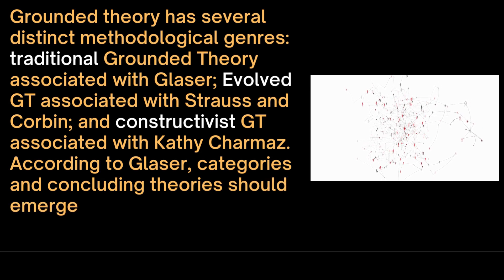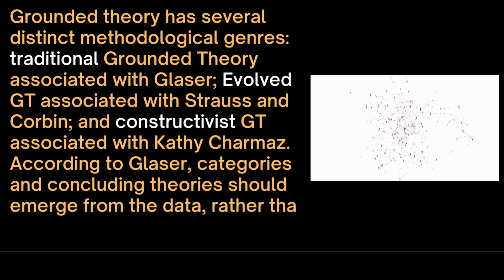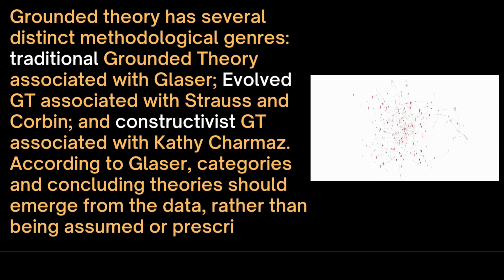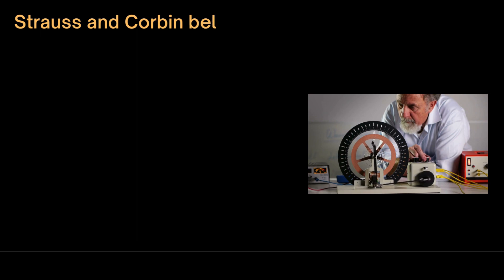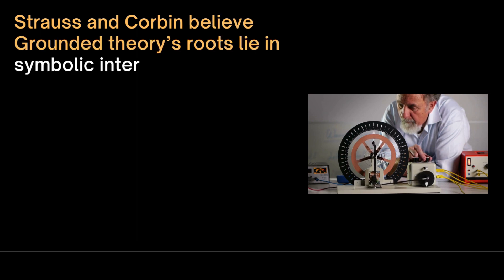Categories and concluding theories should emerge from the data rather than being assumed or prescribed based on pre-existing ideas. Strauss and Corbin believe grounded theory's roots lie in symbolic interactionism.